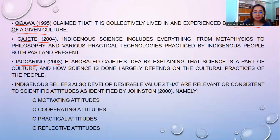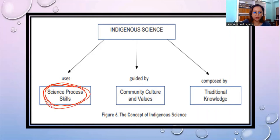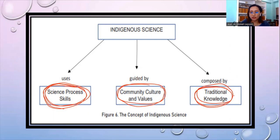Indigenous beliefs also develop desirable values that are relevant or consistent with scientific attitudes as identified by Johnston: motivating attitudes, cooperating attitudes, practical attitudes, and reflective attitudes. Indigenous science uses science process skills, is guided by community, culture, and values — it depends upon the culture of a certain community — and it is composed of traditional knowledge based on the traditions of the people in that certain community or area.